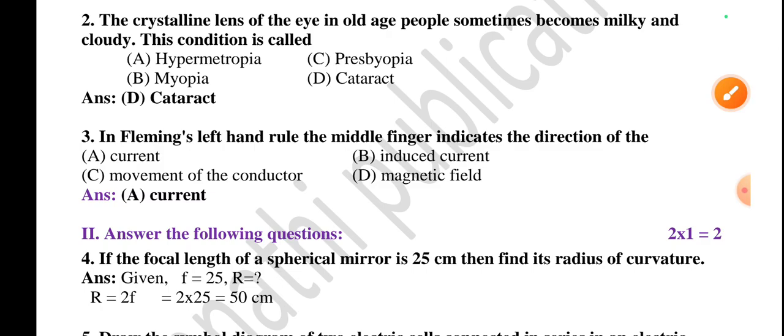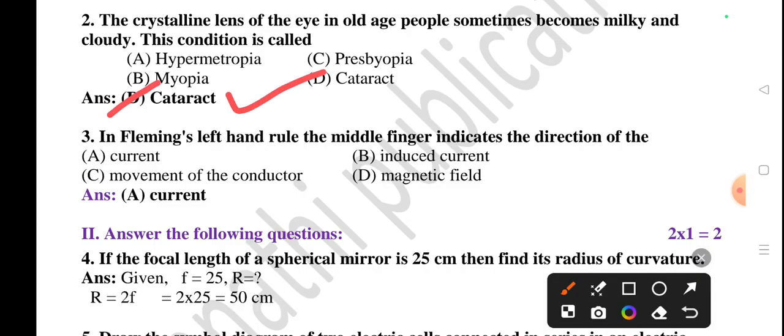So the right answer is option B - diverges the light rays. Question number two: The crystalline lens of the eye in old age people sometimes becomes milky and cloudy. This condition is called cataract. Whenever I was solving, by mistake it was identified as presbyopia, but it's not presbyopia, it is cataract.